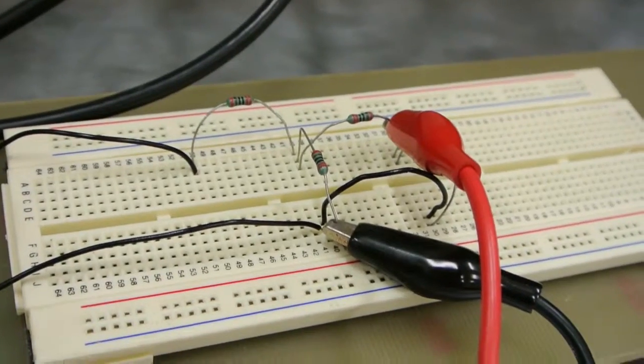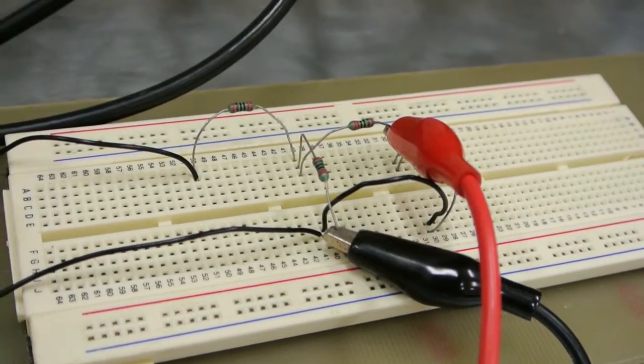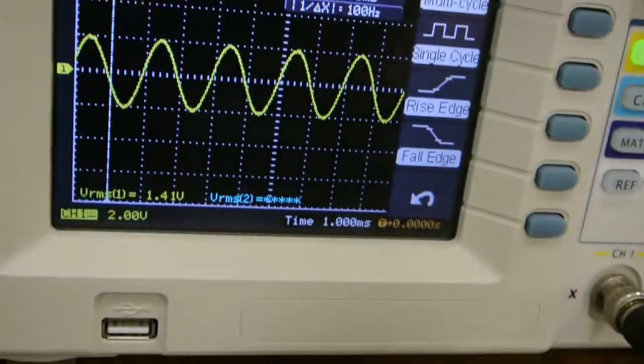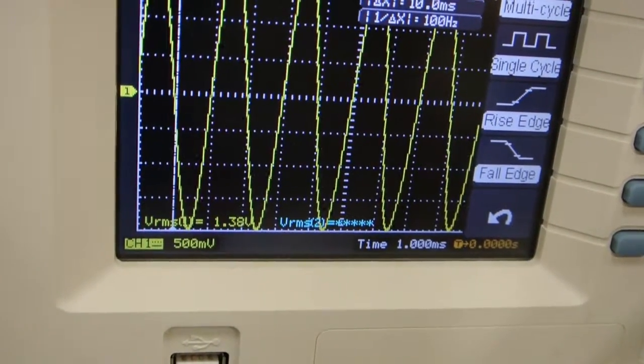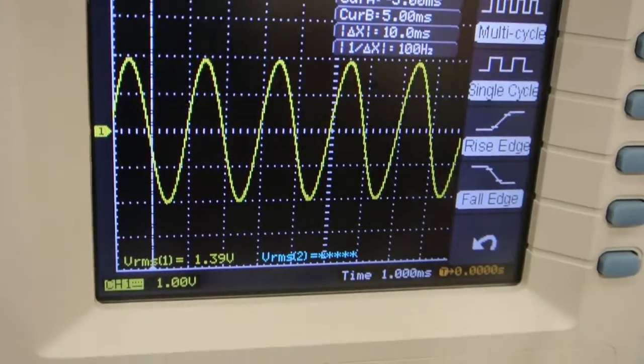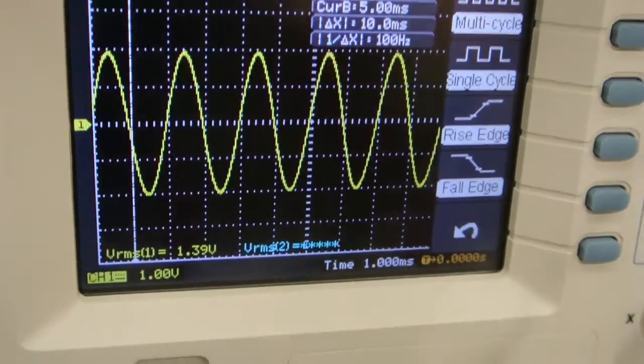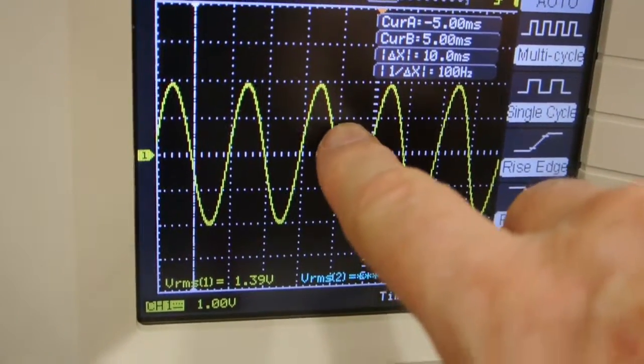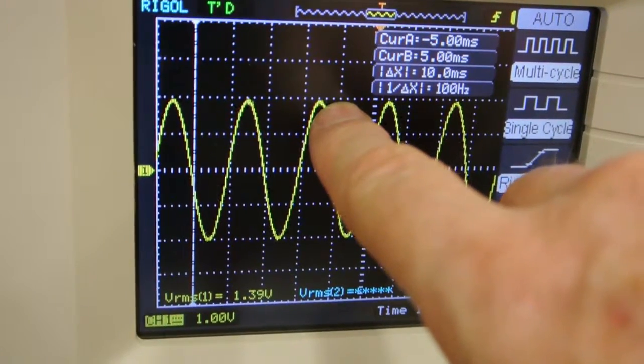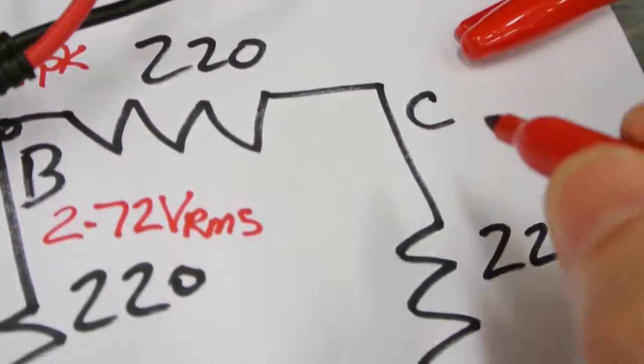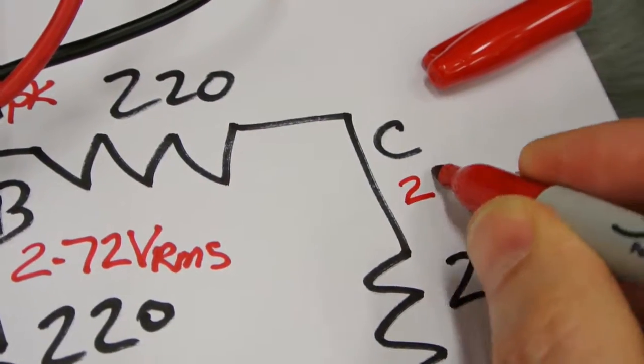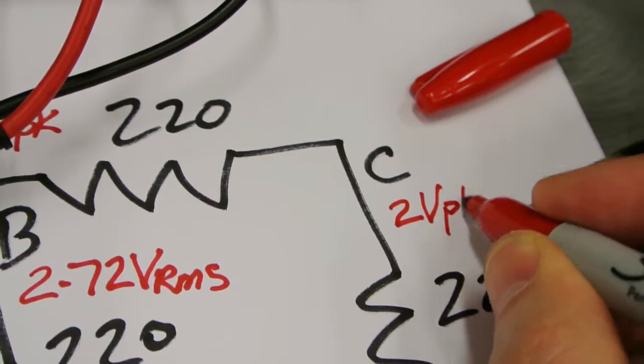So now I've got the oscilloscope across the final resistor. I'll change the oscilloscope to 1 volt per division. And in fact I've got 2 volts peak displayed on the oscilloscope. And that's exactly as we expected. So I'll record that on the paperwork. 2 volts peak.